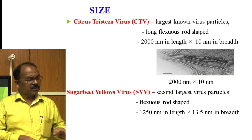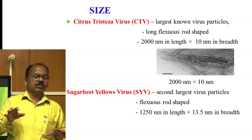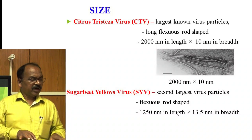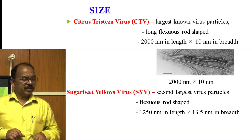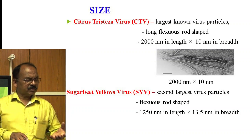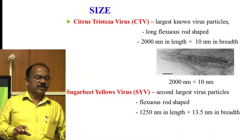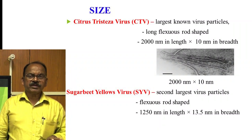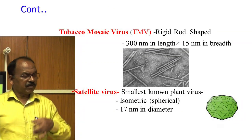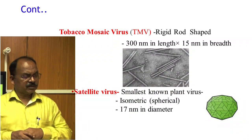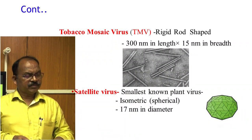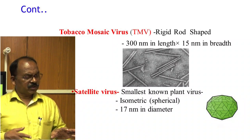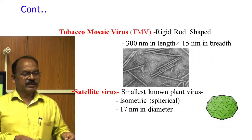Size of plant viruses: Citrus Tristeza Virus consists of the largest plant virus particles — a long flexuous rod-shaped particle measuring 2000 nm in length by 10 nm in breadth. The second largest is Sugar Beet Yellow Virus, also flexuous rod-shaped, measuring 1250 nm in length and 13.3 nm in breadth. Tobacco Mosaic Virus is a rigid rod-shaped particle measuring 300 nm in length and 15 nm in breadth. Satellite Virus is the smallest plant virus, isometric or spherical in shape, measuring 17 nm in diameter.